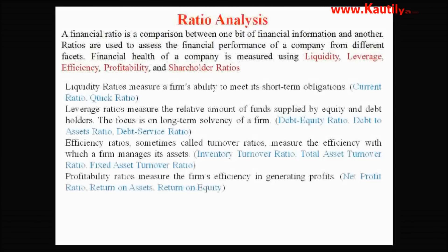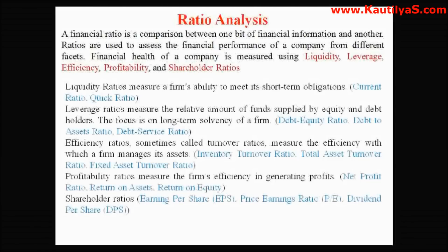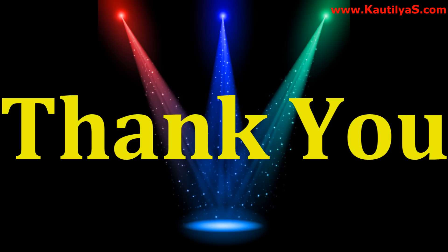Profitability ratios measure the firm's efficiency in generating profits. Net profit ratio, return on assets, and return on equity are examples of profitability ratios. Finally, shareholder ratios — earnings per share (EPS), price earnings ratio (PE multiple), and dividends per share (DPS) — are examples of shareholder ratios. These 15 key ratios are popularly used by many financial analysts to evaluate the financial performance of a company.